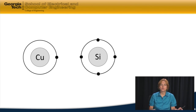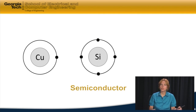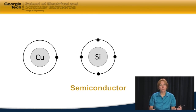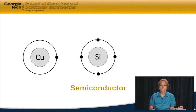Now, there's another set of elements called semiconductors, which do not naturally have that tendency. It takes more energy to release their electrons. For example, silicon has four electrons in its outer shell. The outer shell, to be full, would have eight. So it's only got four, and it just takes too much energy to release those as it is.